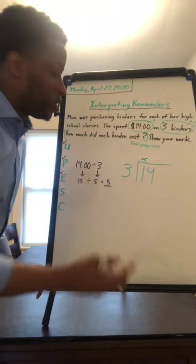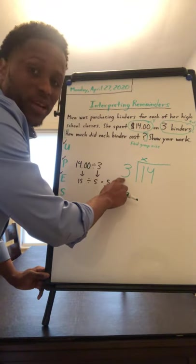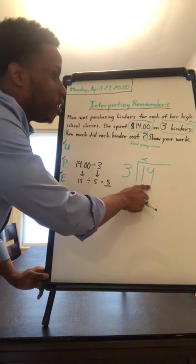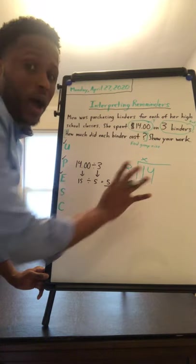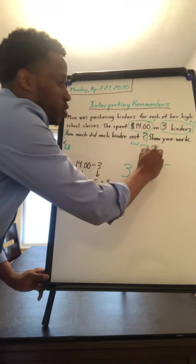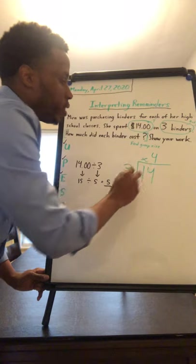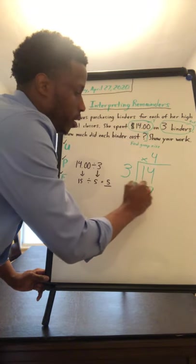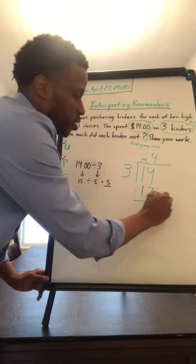The next step is to ask myself, how many times does three fit into 14? Three fits into 14 four times. Five would be too big because three times five is 15. So four times three is 12. And I have a difference of two.